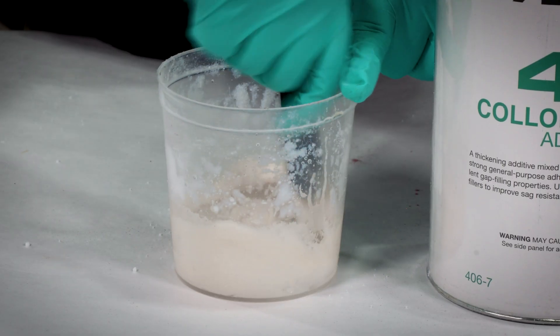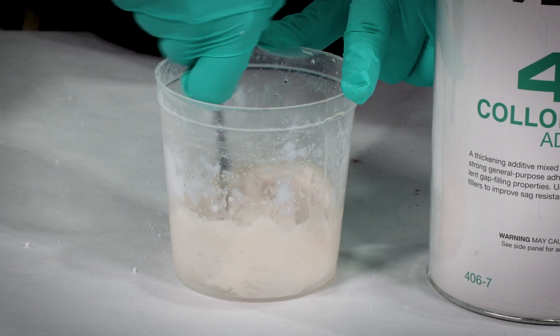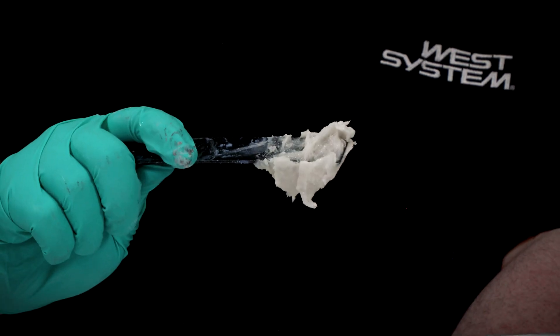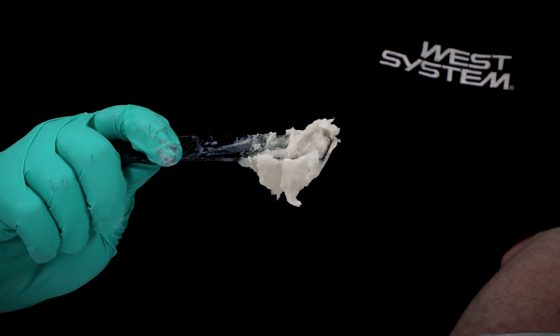Next is the 406 Colloidal Silica. The 406 is really good for general bonding purposes as well as creating fillets. It comes out an off-white color and can be easily dyed any other color.